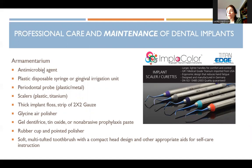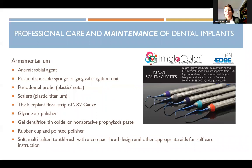The armamentarium includes antimicrobial agents such as Arrestin, Periochip, or similar products; a plastic disposable syringe or gingival irrigation — teaching patients to irrigate around implants is very beneficial. Also included are probes for assessment, plastic or titanium scalers, and thick implant floss to keep it very clean. Usually not a lot of calculus forms around an implant.